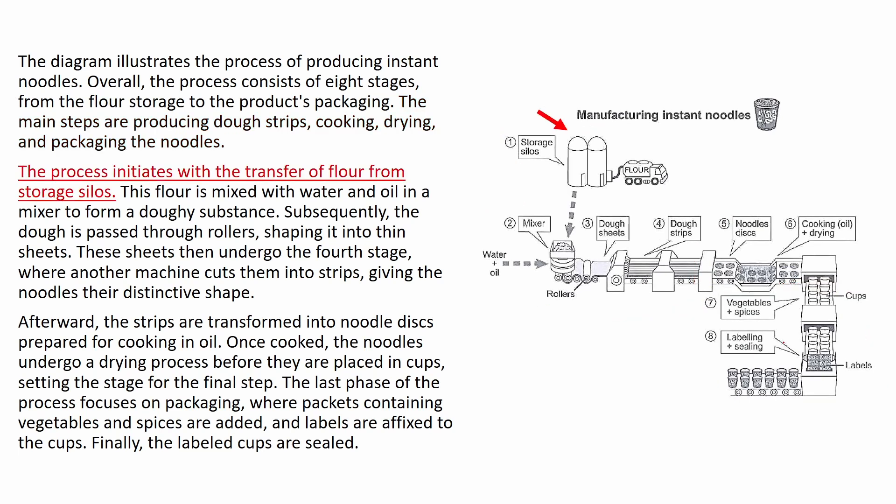Now start from stage one to step eight and describe them one by one. The process initiates with the transfer of flour from the storage silos. So that is step one. Now step two, this flour is mixed with water and oil in a mixer to form a doughy substance. Step three, subsequently the dough is passed through rollers, shaping it into thin sheets. Now step four, these sheets then undergo the fourth stage where another machine cuts them into strips, giving the noodles their distinctive shape.